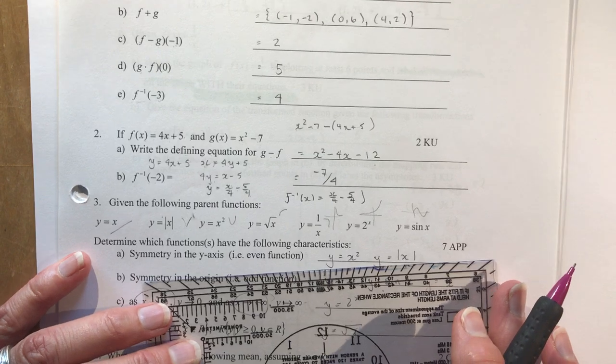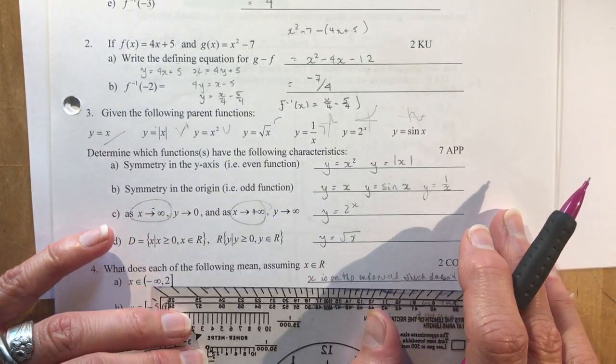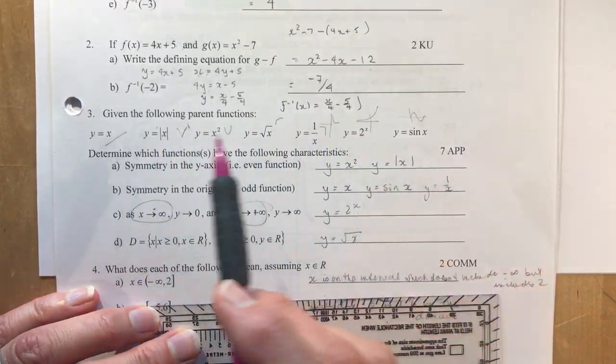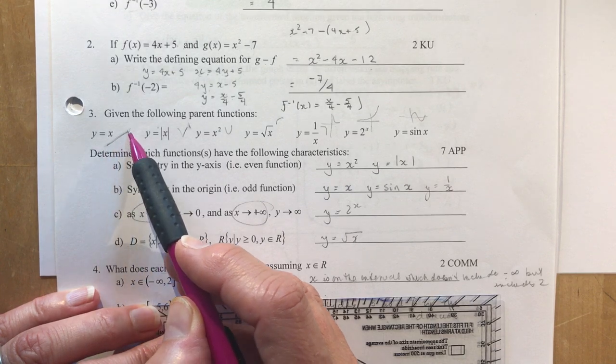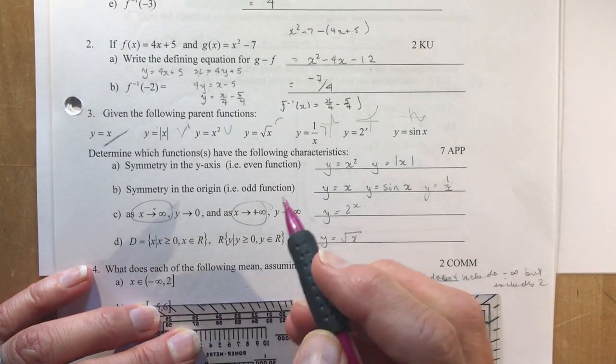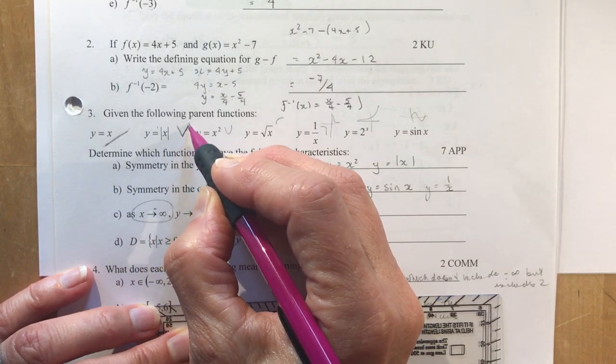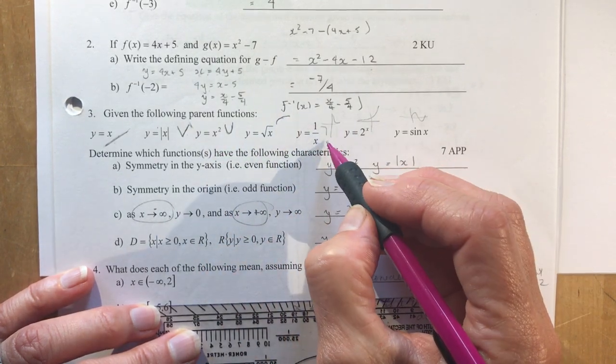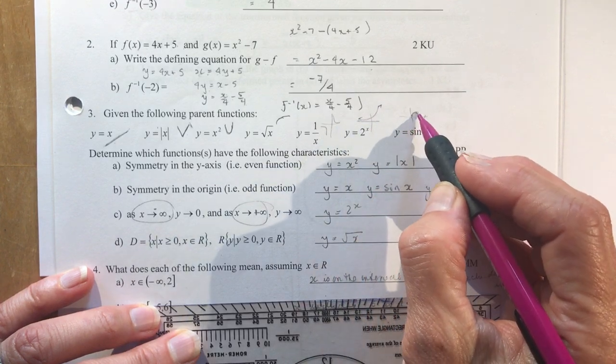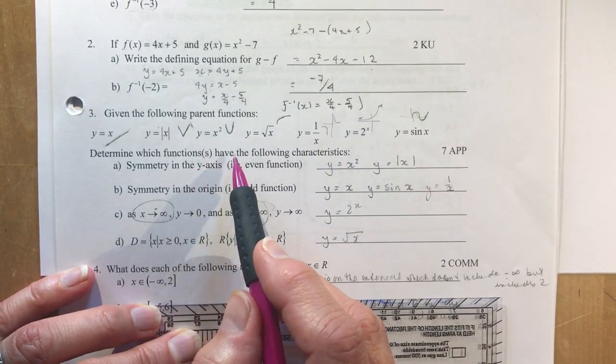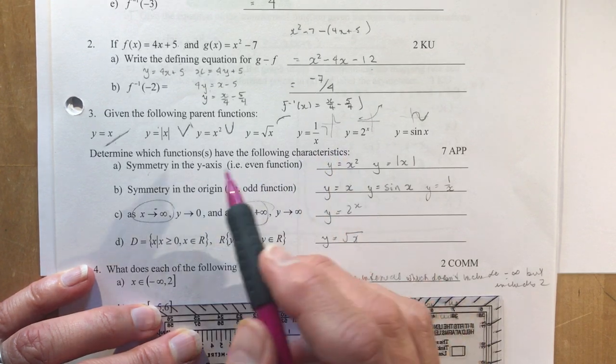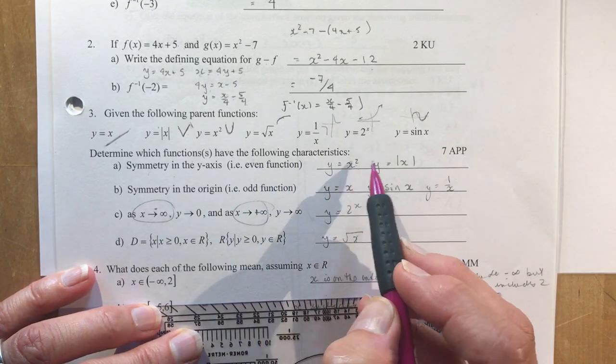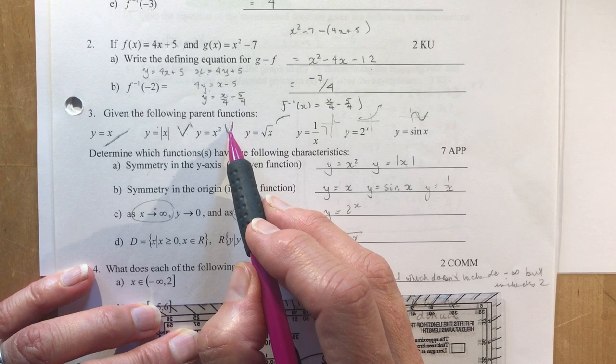Now this one is one that my students struggled with on their test. Maybe you will too. This is understanding the properties of different functions. So you're given all these parent functions. So I've done a little sketch of each one beside it, and that might be a good thing for you to do if you have such a question on your test, so that you can remember what they look like. So we have the absolute value function, linear, absolute value, quadratic, it's x squared, the square root of x, one over x, two to the x, and the sine function. And the questions are, determine which functions have the following characteristics.